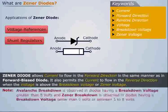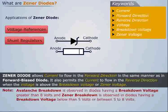Note that avalanche breakdown is observed in diodes having a breakdown voltage greater than 8 volts and Zener breakdown is observed in diodes having a breakdown voltage below 5 volts or between 5 to 8 volts.